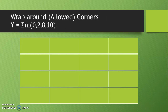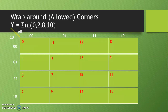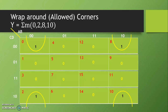We take one more example of wrap around. In all 4 corners, wrap around at a time is possible. Boolean function given is summation m(0, 2, 8, 10). So we prepare K-map and write 1 in cells 0, 2, 8 and 10, and 0 in all other cells. Wrap around of top and bottom is possible, wrap around of rightmost and leftmost column is possible, but in this case we have 4 corners. So wrap around of all 4 corners at a time is possible and we can prepare a quad.